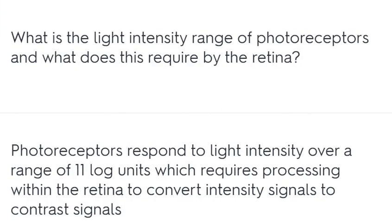What is the light intensity range of photoreceptors and what does this require by the retina? Photoreceptors respond to light intensity over a range of 11 log units, which requires processing within the retina to convert intensity signals to contrast signals.